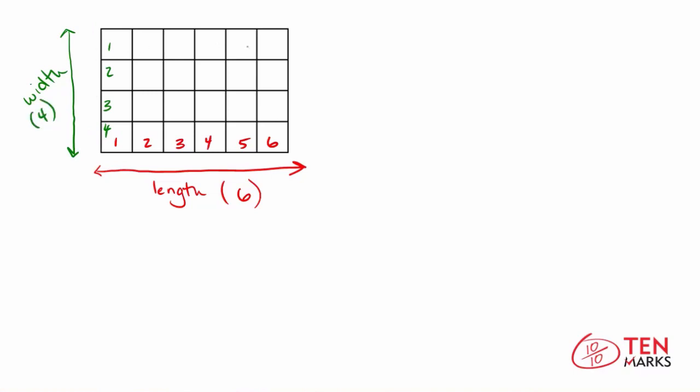Now the width makes these rows here, as they go across. And the length has these columns up and down.